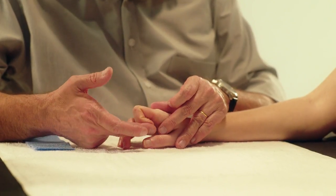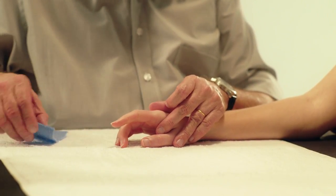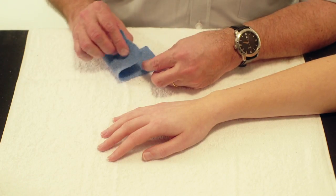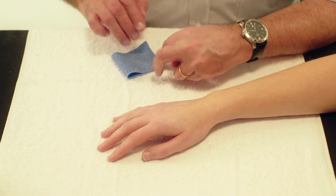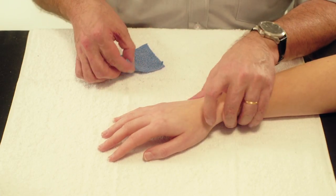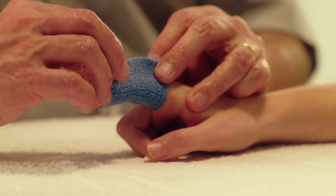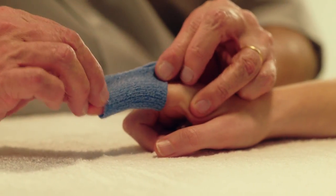Use a strip of orthicast six centimeters wide and 10 to 12 centimeters long. Fold the piece in half. Place the orthicast on the palmar surface of the finger and pinch together on the dorsal surface.